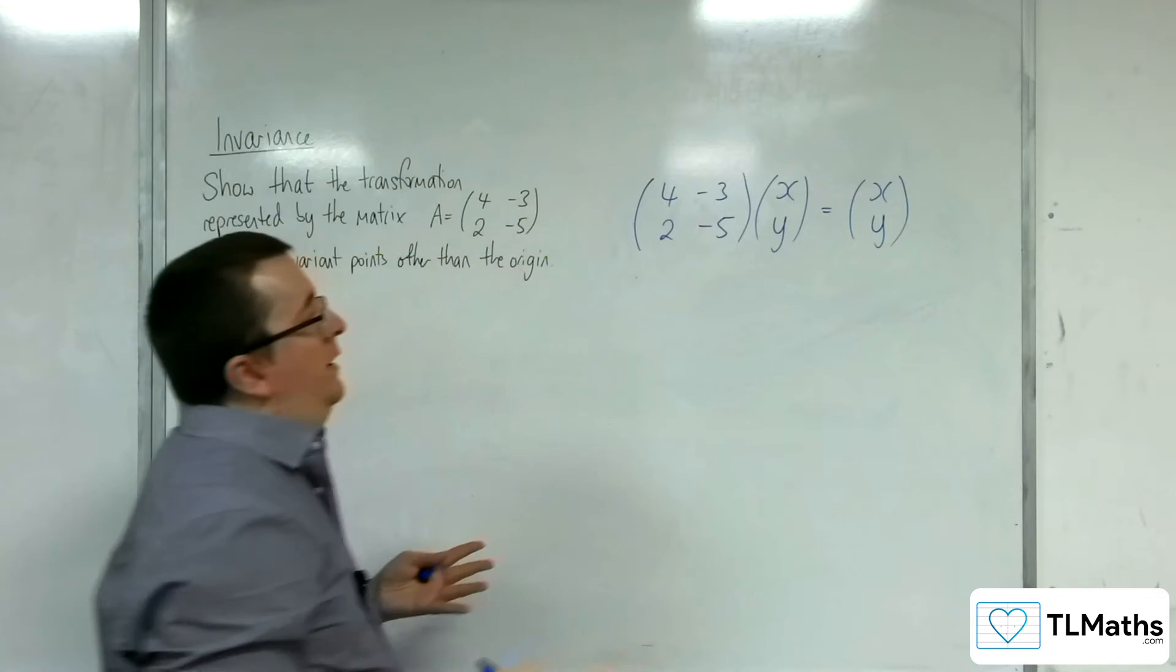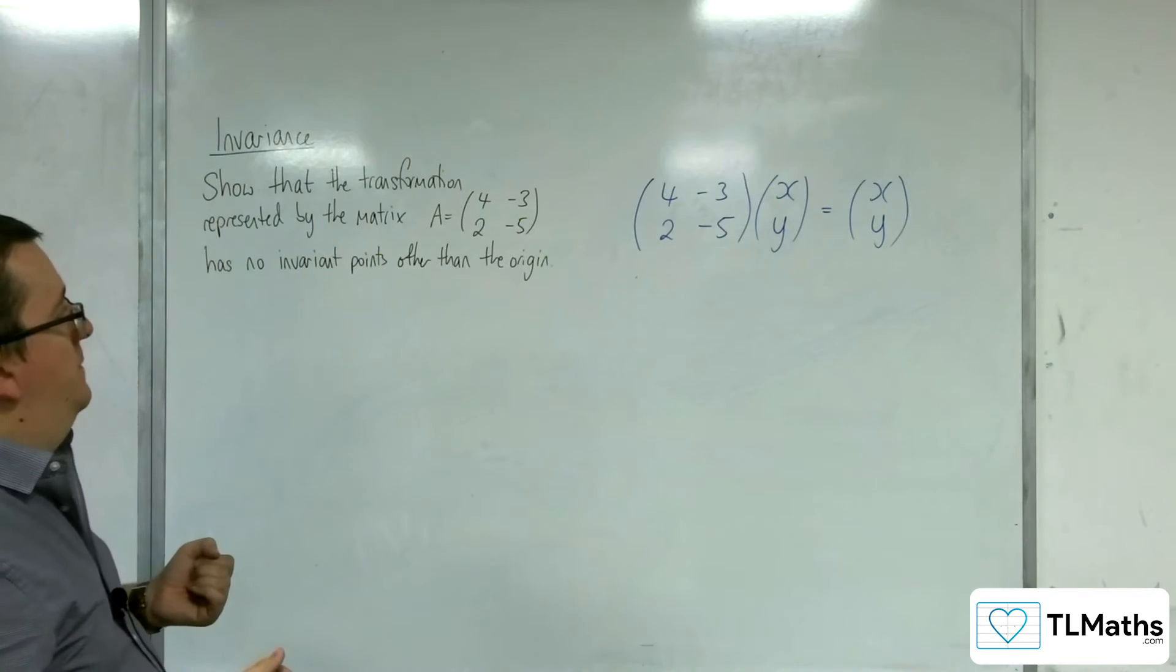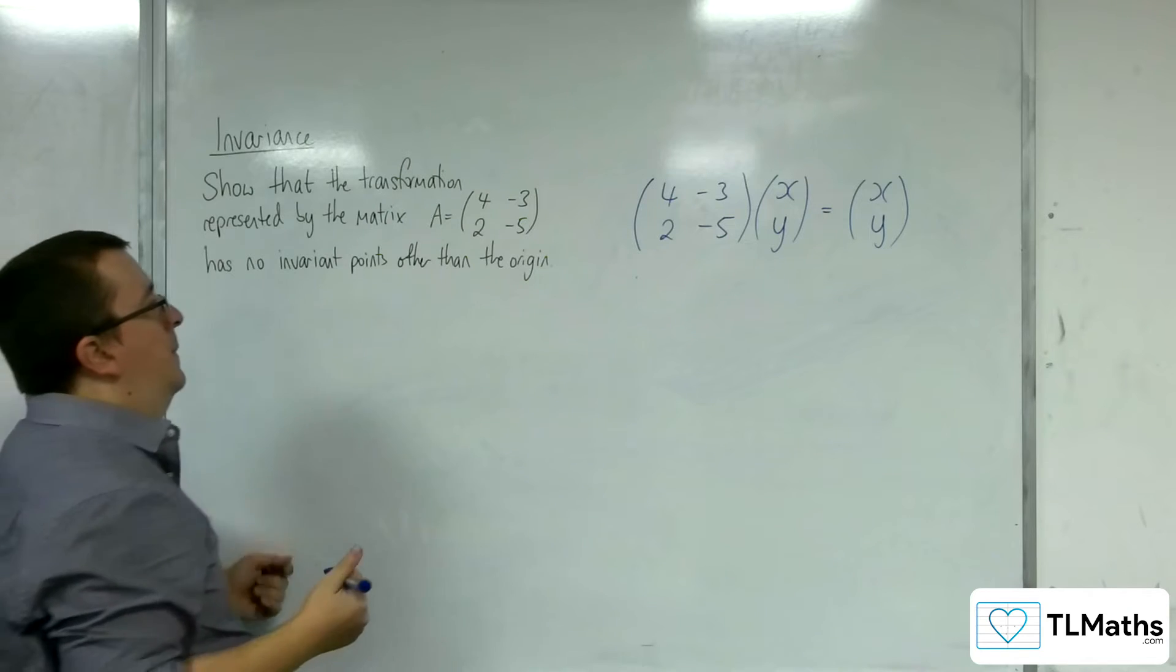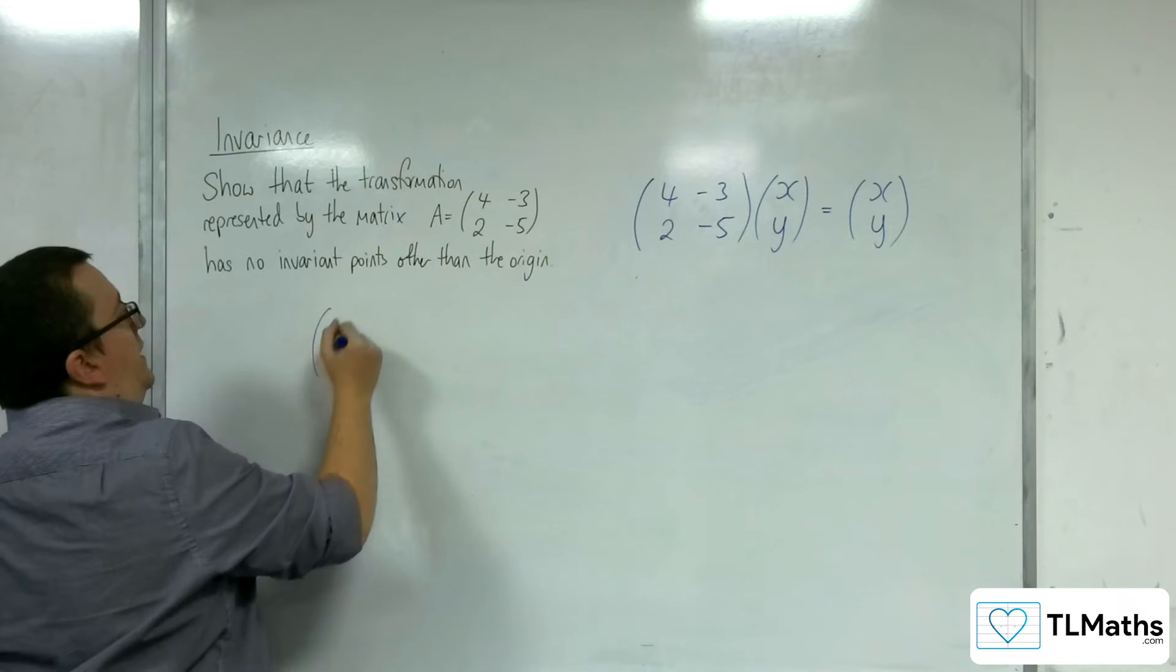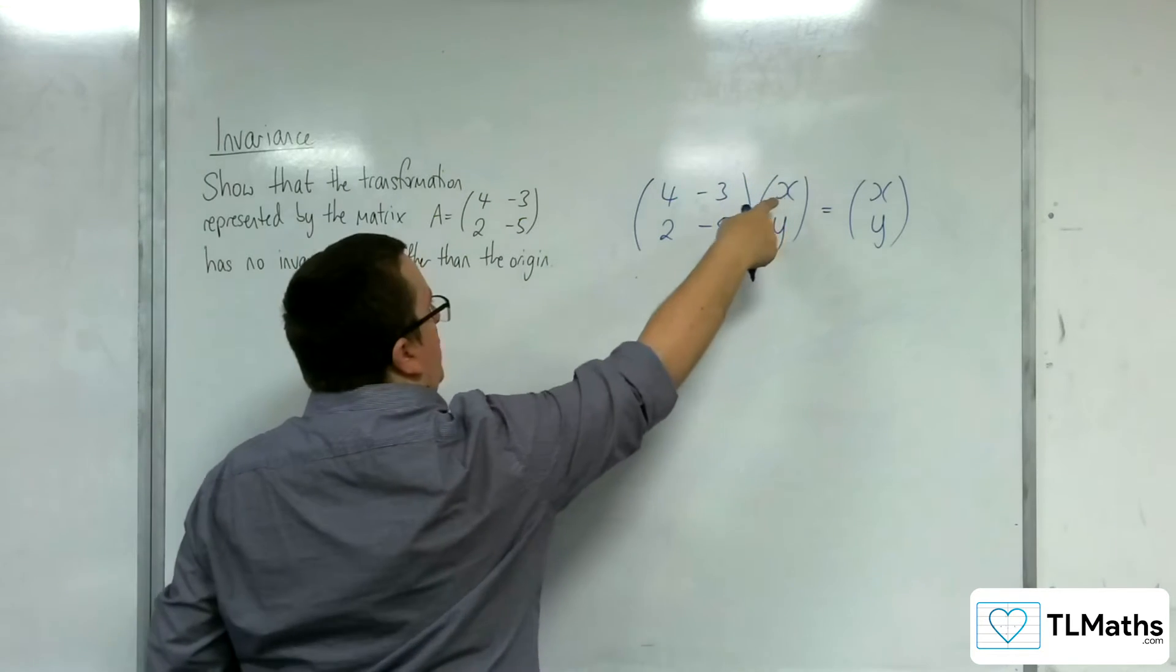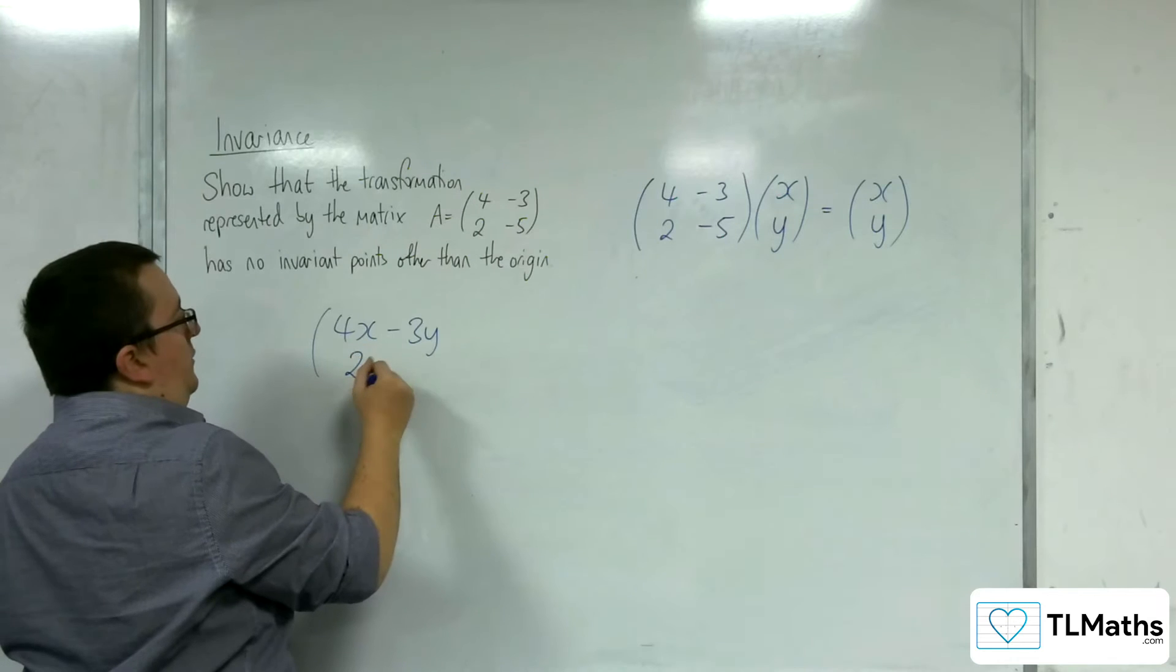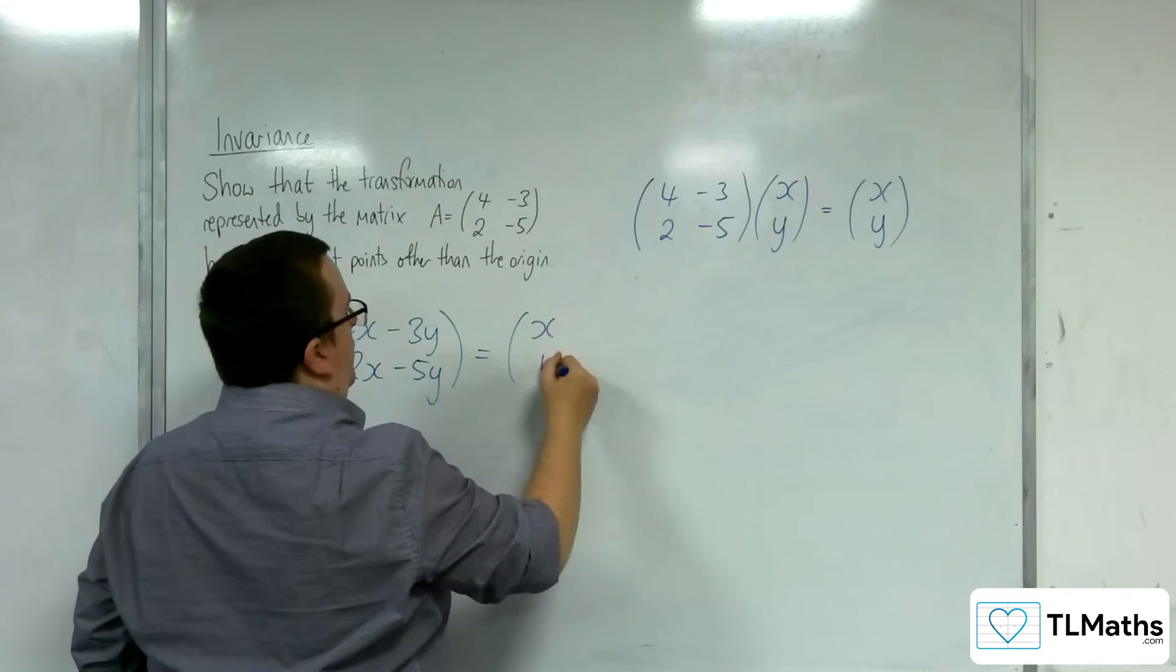So solving this will allow me to find which points are invariant under this transformation. We've got 4 minus 3 times by the (x, y), so we're going to have 4x take away 3y. 2 minus 5 multiplying the (x, y), so 2x take away 5y. And that's got to be equal to (x, y).